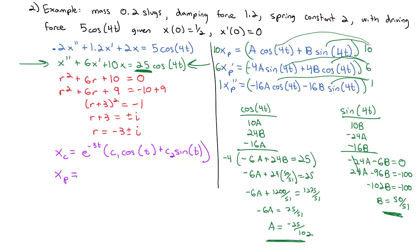So we've got A and B, so now we can say we know what x_p is equal to. x_p = -25/102 cos(4t) + 50/51 sin(4t).